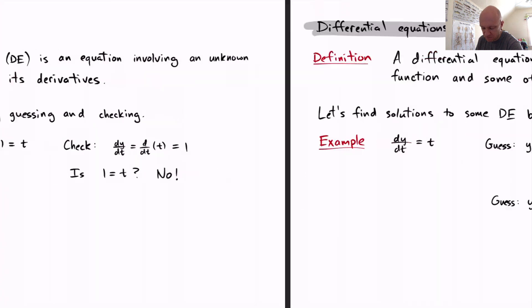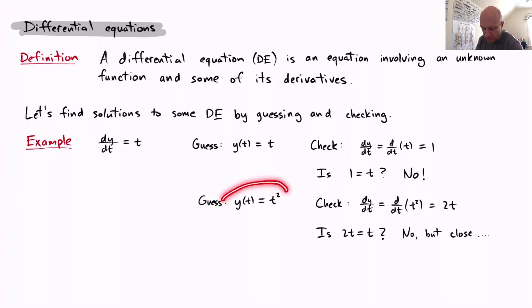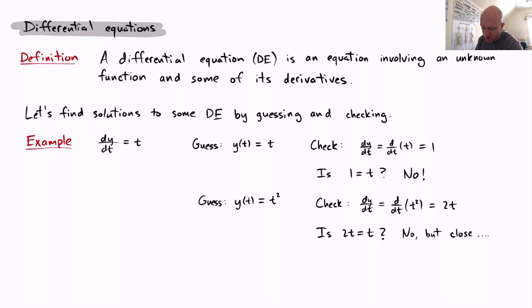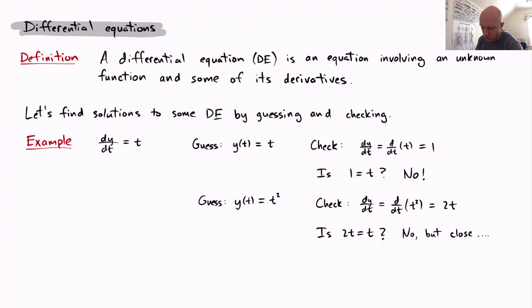Let's make another guess. How about y of t equals t squared? If you know where this is going, you'll know that this is pretty close. Let's check to see if dy/dt equals t. Well, dy/dt equals the derivative of t squared, which is 2t. Is 2t equal to t? No, it's not — not unless t equals zero. But we're looking for all values of t, so no, it's not, but it's close.